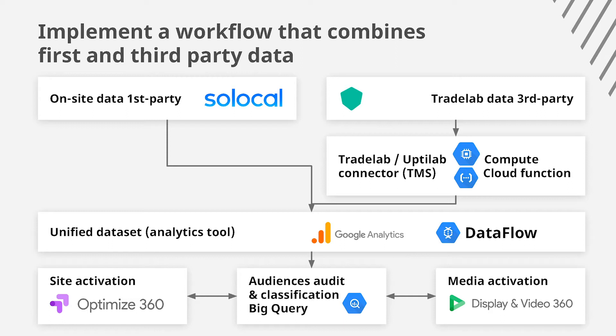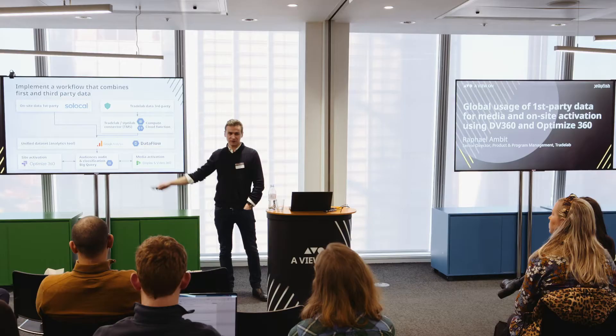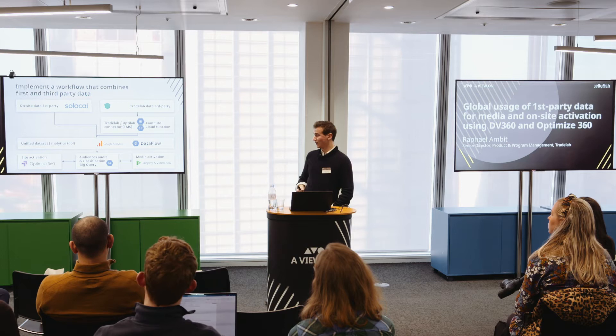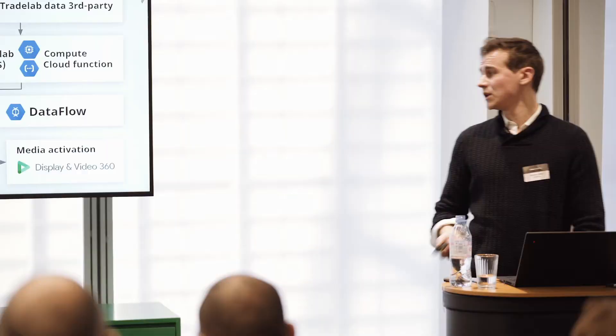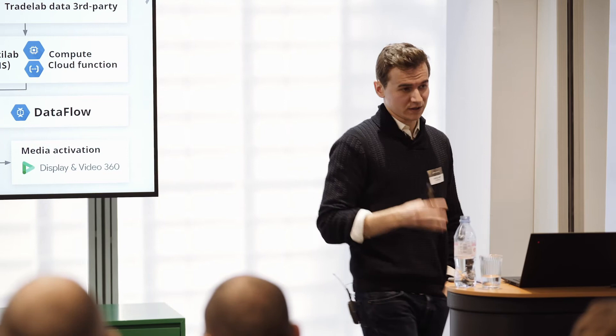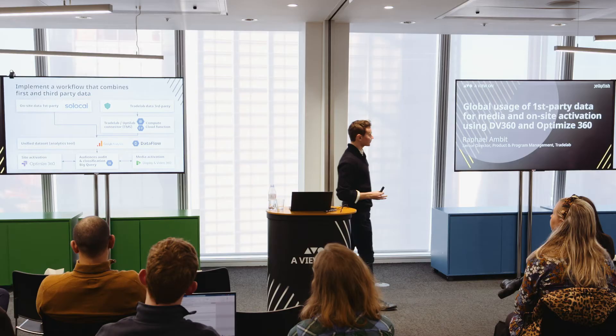How did we merge that? On the left side of the sketch, we had the So Local data coming from their site measured by Google Analytics. On the right side, we had data from Treadlab — the user data used during media activation within the DSP. We used Google Analytics as a proxy for a new data lake: we injected our Treadlab data into Google Analytics, adding every parameter for every user, to create this enriched dataset. We relied on Compute Engine and Cloud Functions to orchestrate the calculation process, and Dataflow to format and process data from different sources.